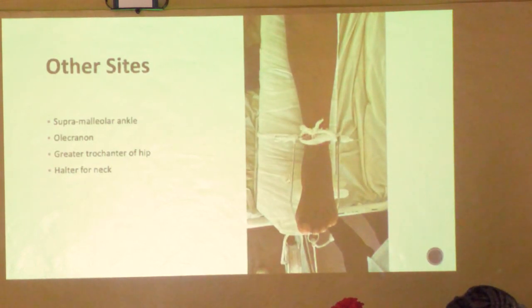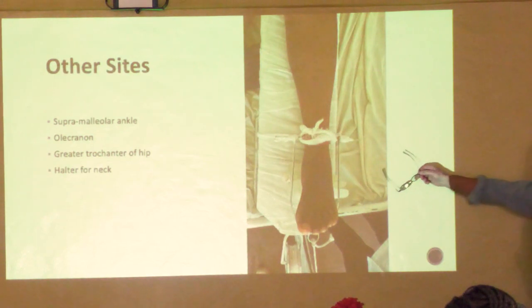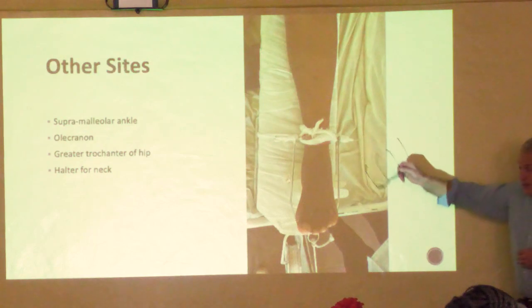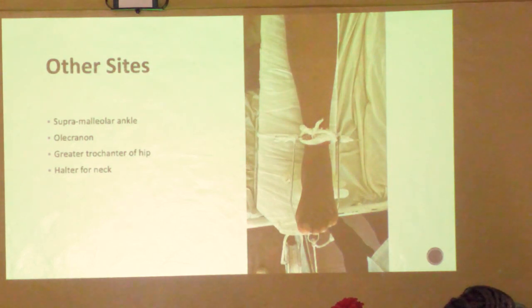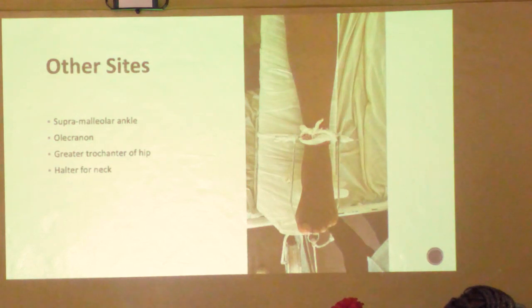Other traction sites include a supramalleolar pin going through the fibula across the interosseous membrane - a very safe place for traction, but you need to be two to three centimetres above the ankle to avoid the ankle joint capsule on the medial side. There are also descriptions of screws into the olecranon and into the greater trochanter for pelvic fractures to pull the femur out of the pelvis.